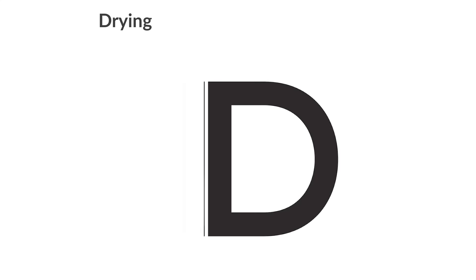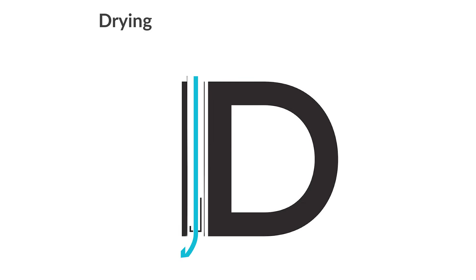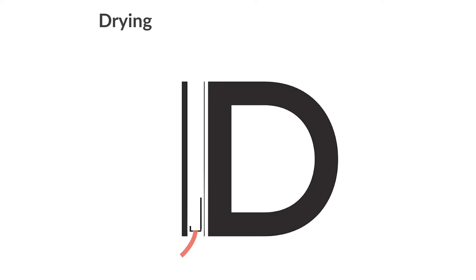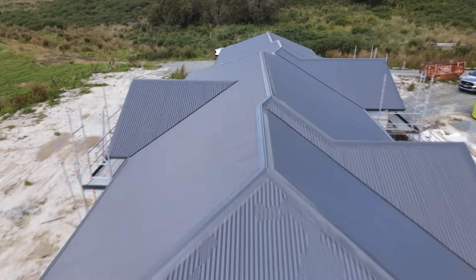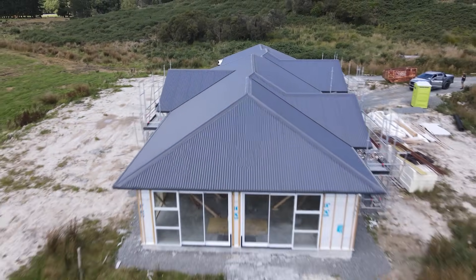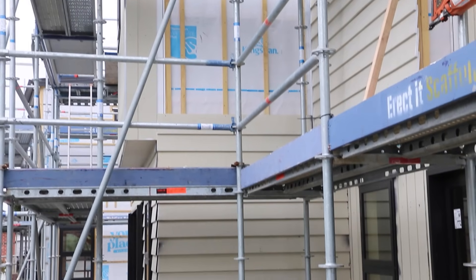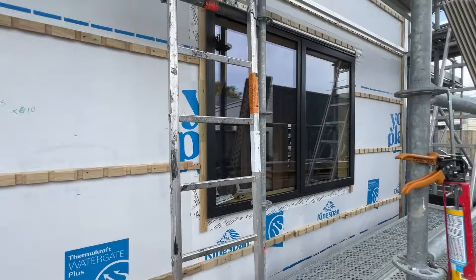The next D is drying, which is all about airflow. Once water that has penetrated a structure has drained out, the residue remaining on the surface needs to dry out. In cavity systems, the same perforated strip that allows drainage also encourages movement of air between the cladding and the framing, contributing to evaporation. So the cavity is not just for water to drain down — airflow comes through, picks up moisture left behind on surfaces, and dries it out.